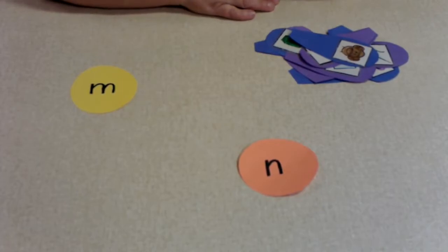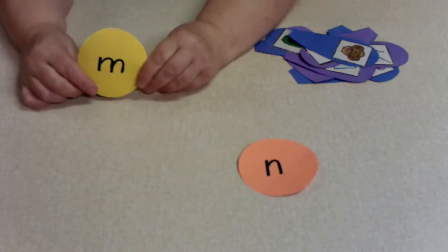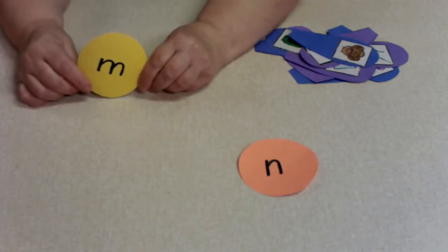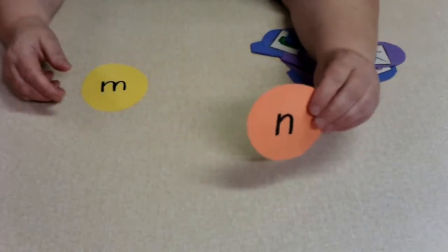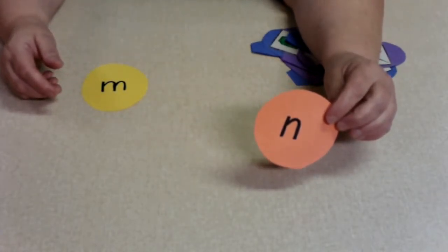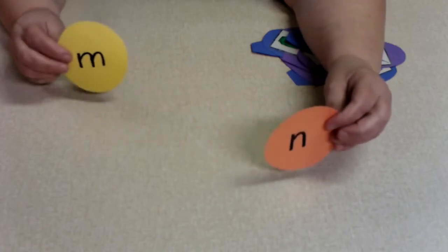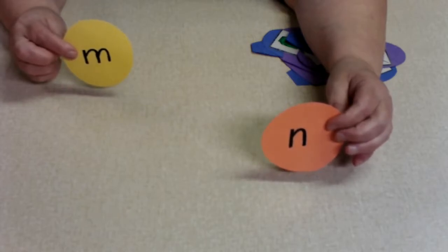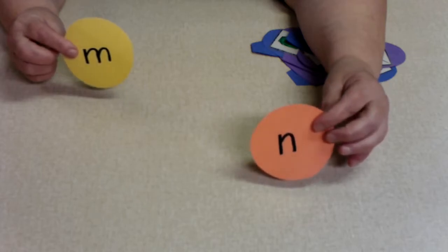We are going to listen for the difference between the M sound, which makes M, or the N sound, which makes N. These sounds are very similar. M says map and N says nap.